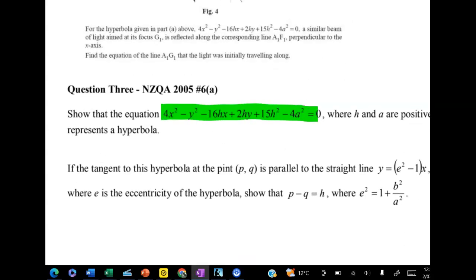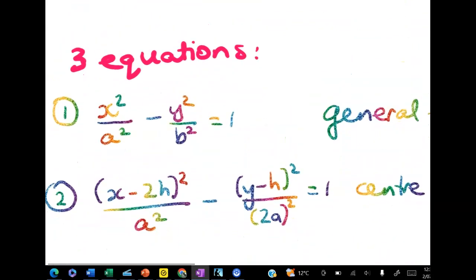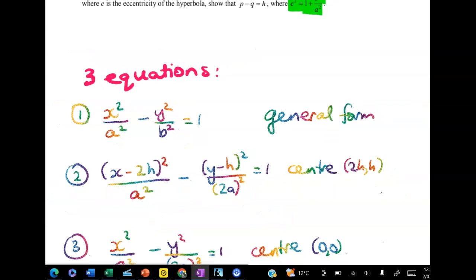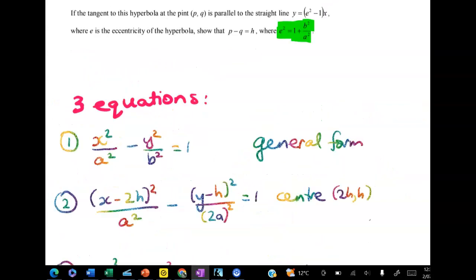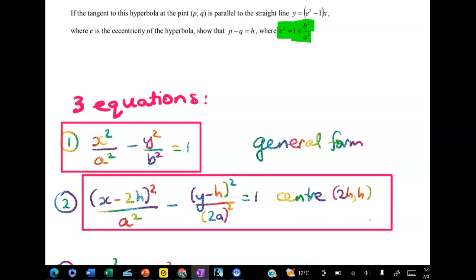In 6a you were given this equation and you had to show that it represented a hyperbola. So it does represent a hyperbola and it represents the second equation down here. The general form of a hyperbola is given in equation 1. But in our situation once we'd completed the square, this was my equation. So it represents a hyperbola but the center is not at the origin. The center is at 2h and h.